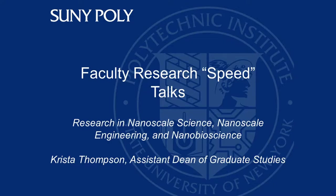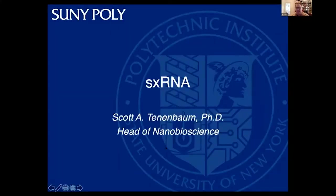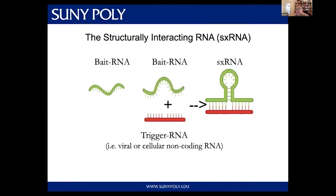I'm Scott Tenenbaum. I'm with the NanoBio Group. I work on RNA — specifically something called SxRNA. RNA, along with DNA and protein, are the three main building blocks of life. I think RNA is the most important. It plays an intermediary role going from DNA to protein, but it also does a lot of other cool things, usually as a result of its structure. RNA forms structure at the nanoscale, and a lot of the structures are in a 5 to 20 nanometer range.